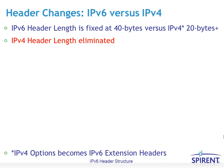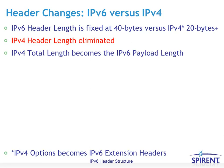Since the IPv4 header was variable, there had to be a header length field indicating the size of the IPv4 header for any particular packet. IPv6 does not have that concern with a fixed 40-byte header. The IPv4 total length becomes the IPv6 payload length — a key difference is that IPv4 total length included the size of the IPv4 header, whereas the IPv6 payload length only includes information following the fixed 40-byte IPv6 header.